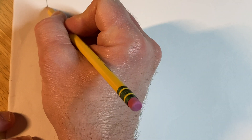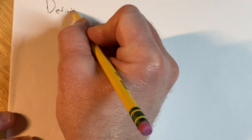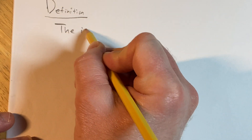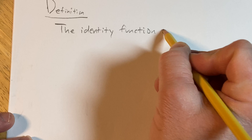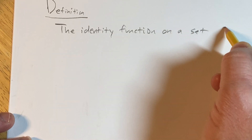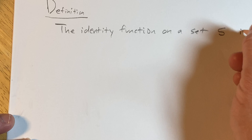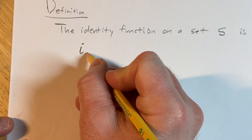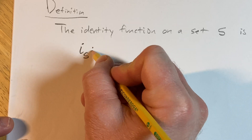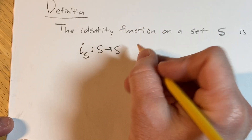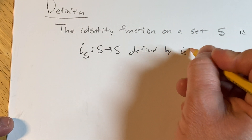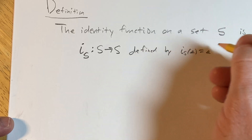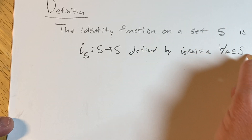Definition. The identity function on a set S — using the notation i sub S — is a function from S into S, defined by i sub S of little s equals little s, for all little s in big S. That's how it's defined.